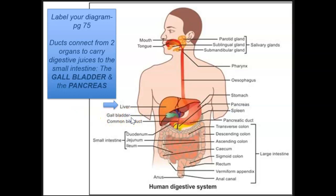We will start with the liver and go counterclockwise. The liver is this very large organ that sits on top of the stomach. Next up we have the gallbladder, tucked in underneath the liver. Then there's the common bile duct, which is one of the ducts that connects both the pancreas and the gallbladder to the small intestine.